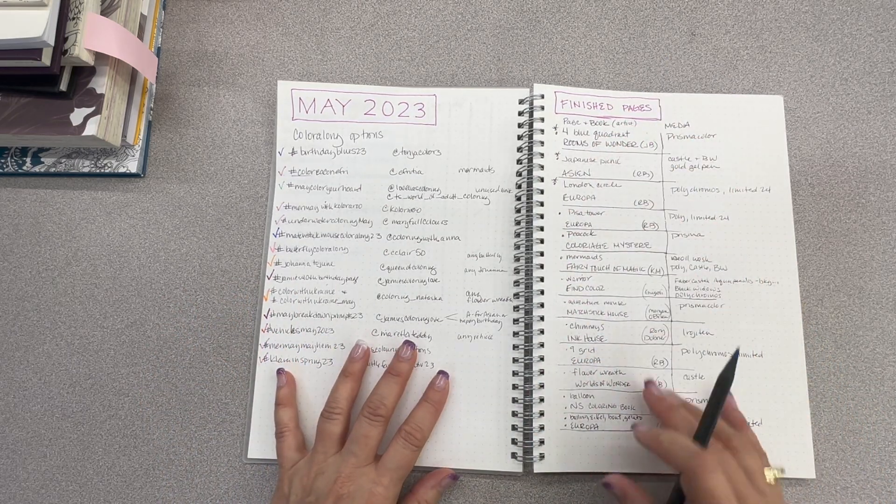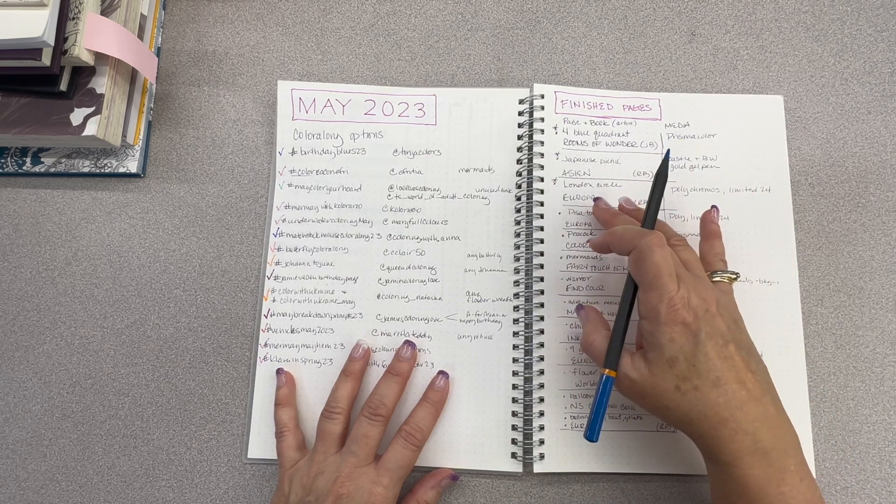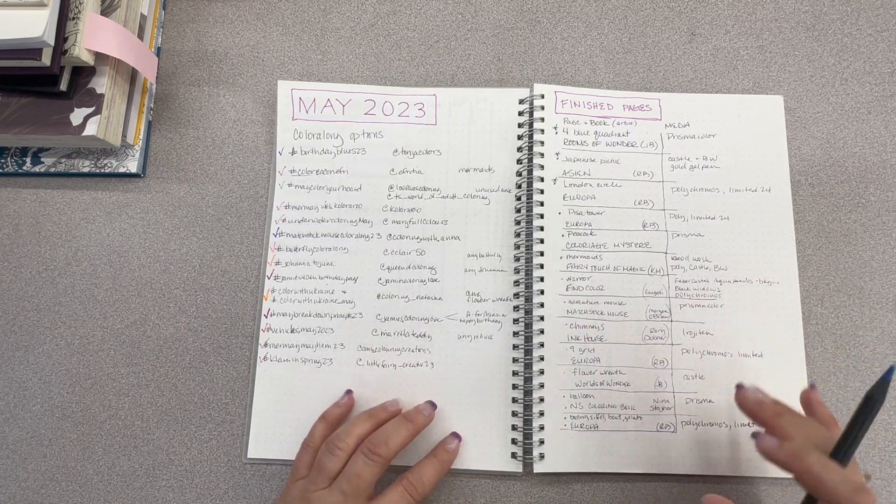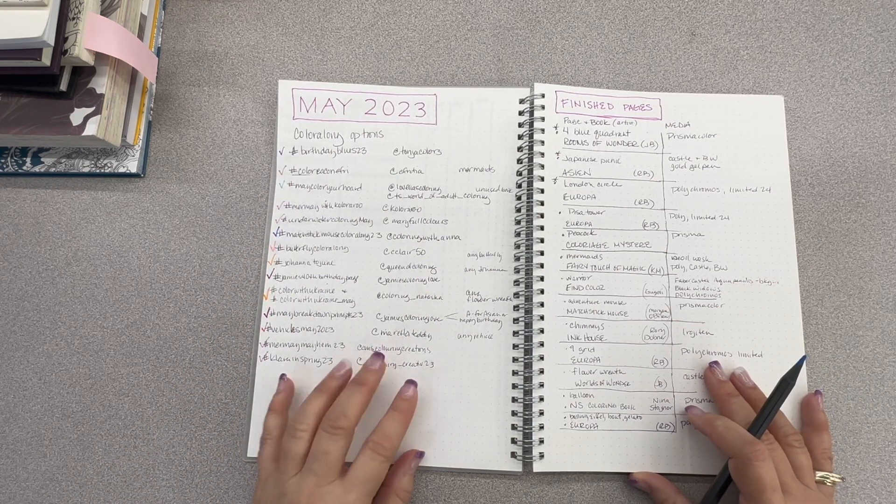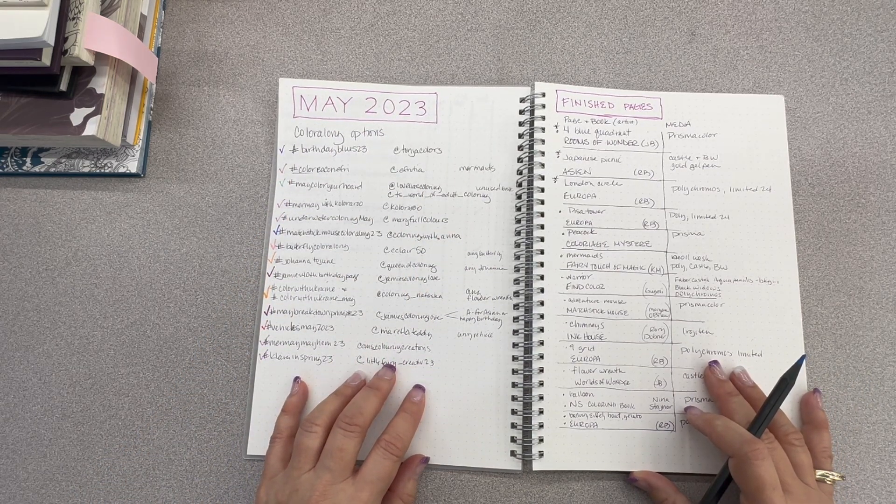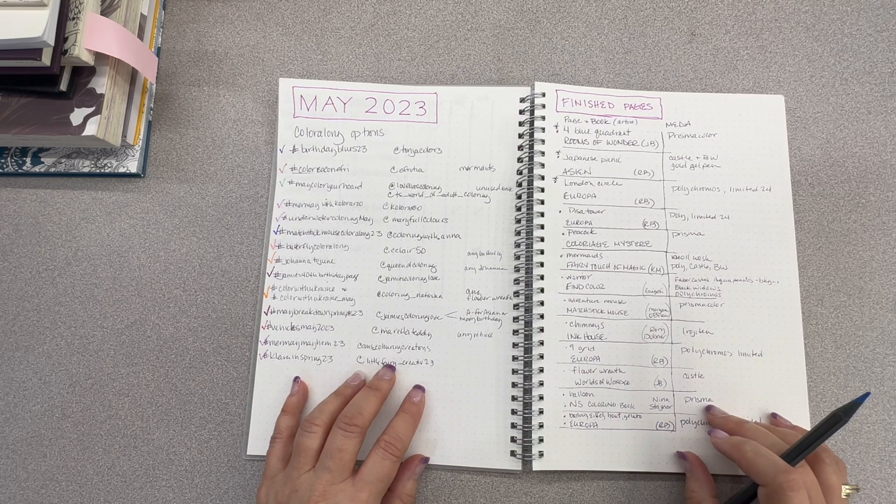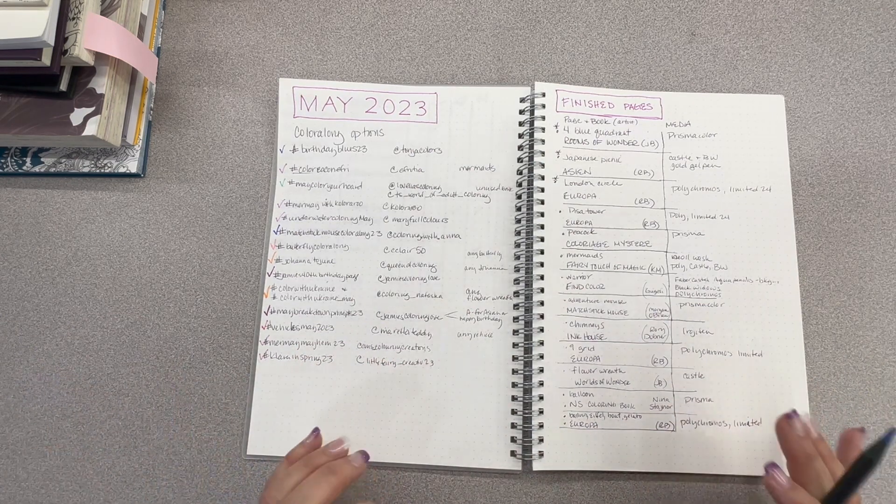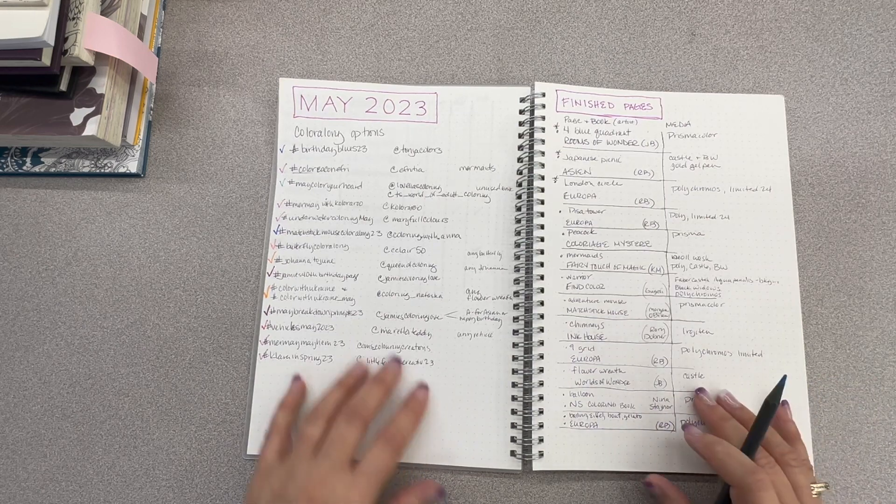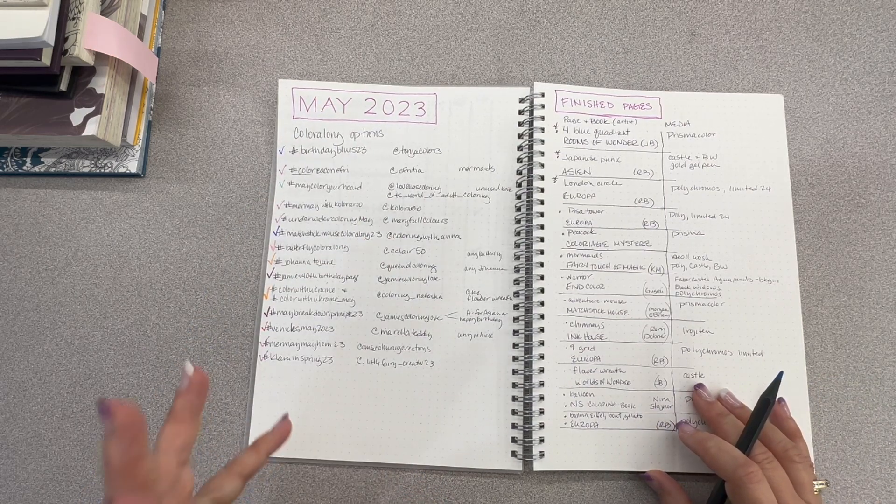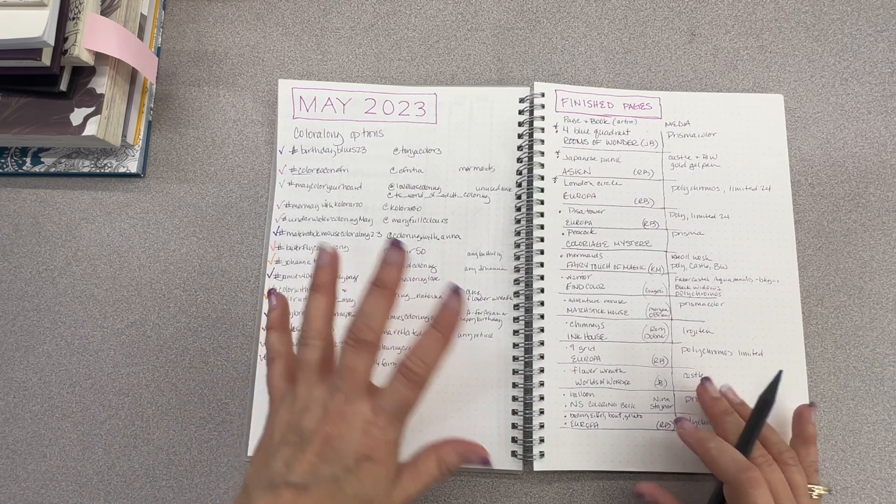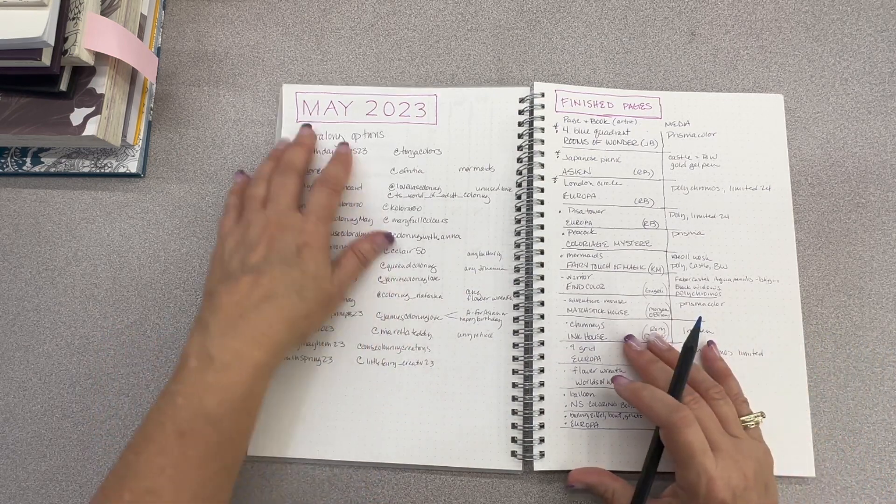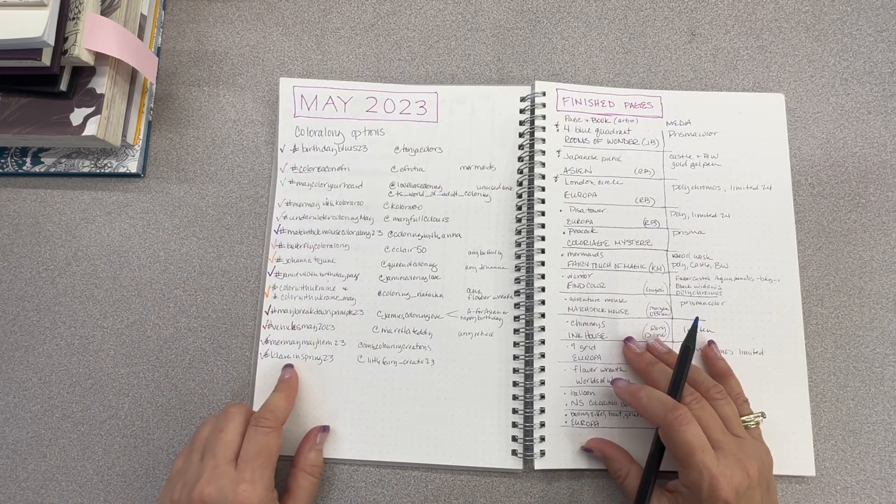So I have one page where I list the finished page, the book that it's in, and the illustrator, and then what mediums I used, so I'll be able to use that coming up in this video to remind myself. And then the other thing I did was list all of the color along options that I could find at the beginning of the month thanks to Passionista Colorista and Nurma Coloring. I think those are the two ladies that I know of that post all the coming up ones, and so I made a list of all the ones that were options for me, either because I had the book or I liked the theme or I thought I could accomplish it with no expectations of finishing any certain number of them.